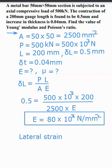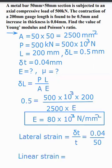Next, Poisson's ratio. Poisson's ratio means it is lateral strain to linear strain. Lateral strain is equal to delta t divided by t. So delta t it is 0.04mm divided by t it is 50mm. Then linear strain. Linear strain is equal to delta L by L. Delta L it is 0.5 divided by L it is 200mm.